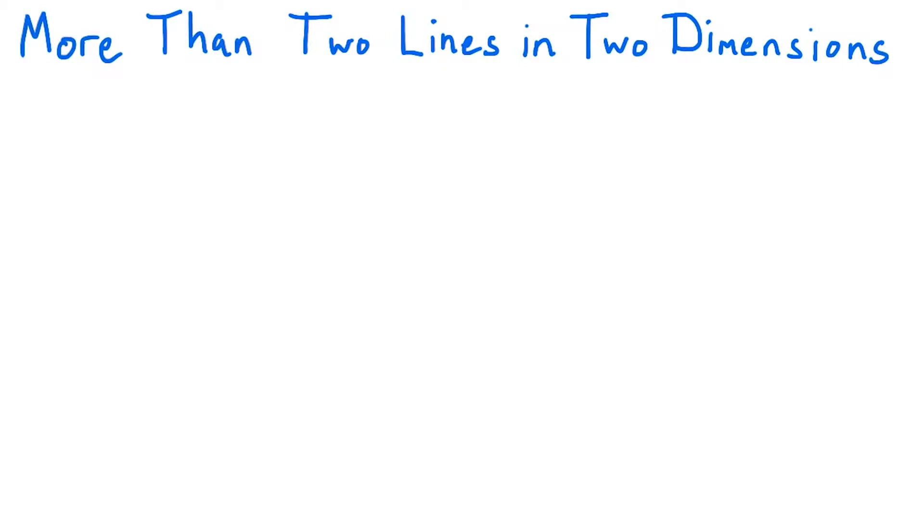So far, we've been looking at intersections of two lines in 2D. But what happens if we introduce a third line?